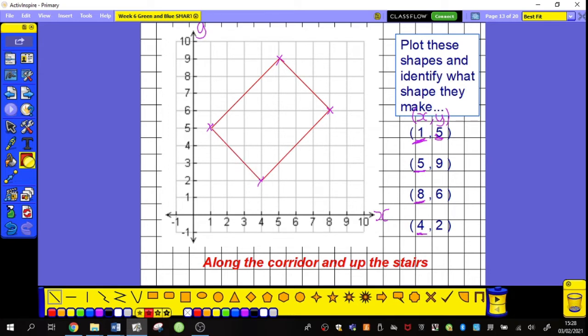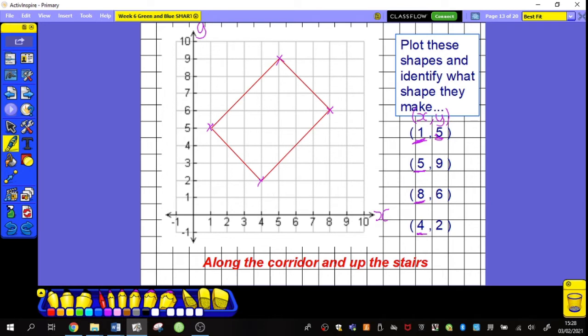Perfect. There we go. So, it's very clear I have a four-sided shape. I can see that, in here, I have right angles.